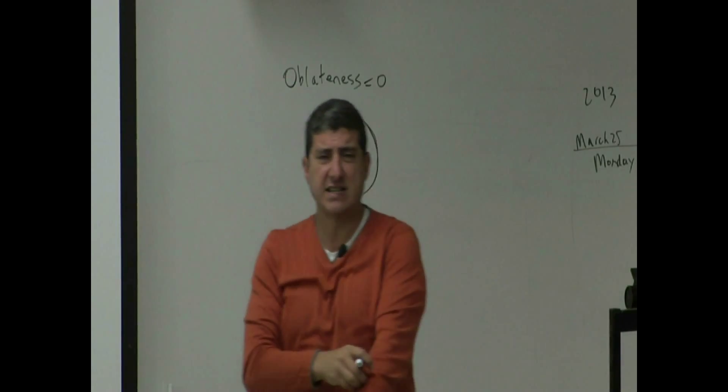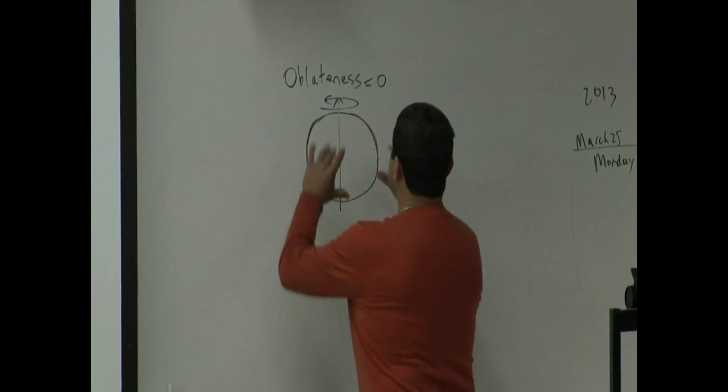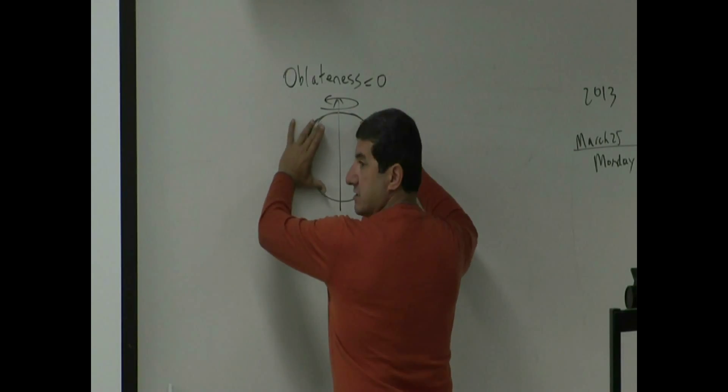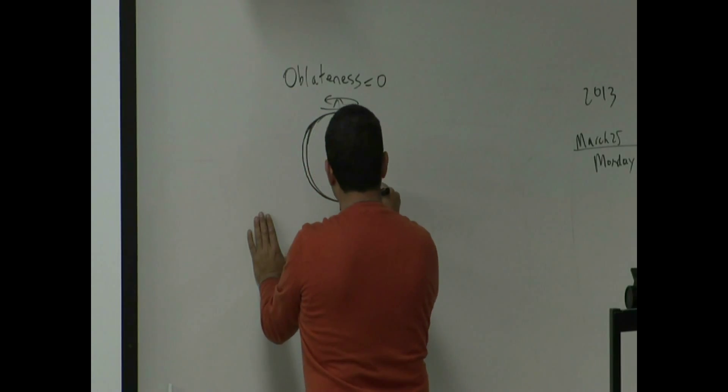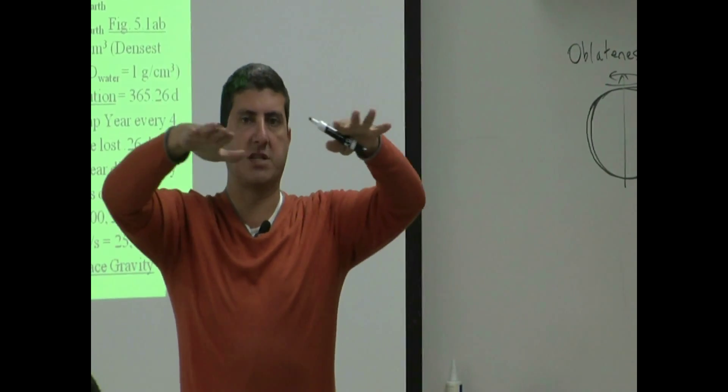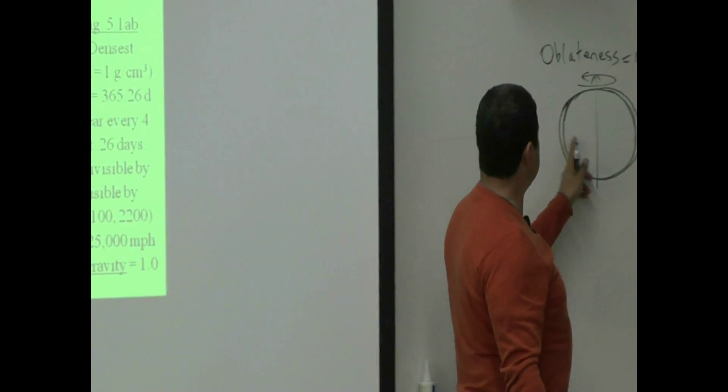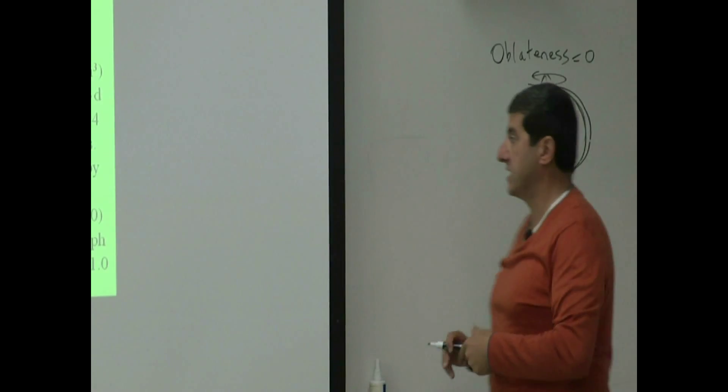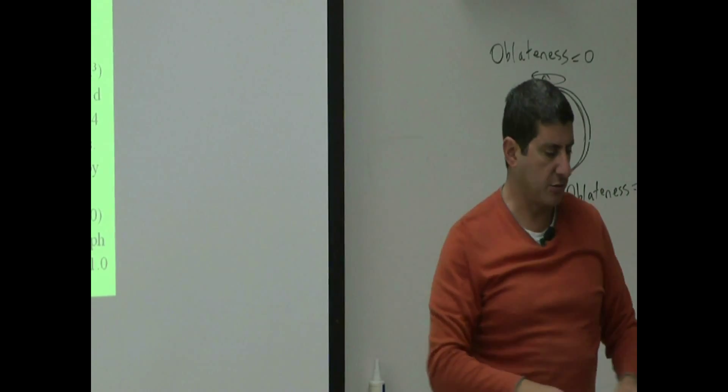But we know most planets have a little bit of oblateness because they spin this way. And because they spin this way, they tend to bulge out like this a little bit. That's just the general law of physics and nature. When you take a pizza dough and you start twirling it like this, the pizza starts flattening out and getting wider. Generally, this length becomes wider than this. And then the oblateness becomes non-zero. So for the Earth, the oblateness is 0.0034. So what that means is it's close to spherical but not quite.